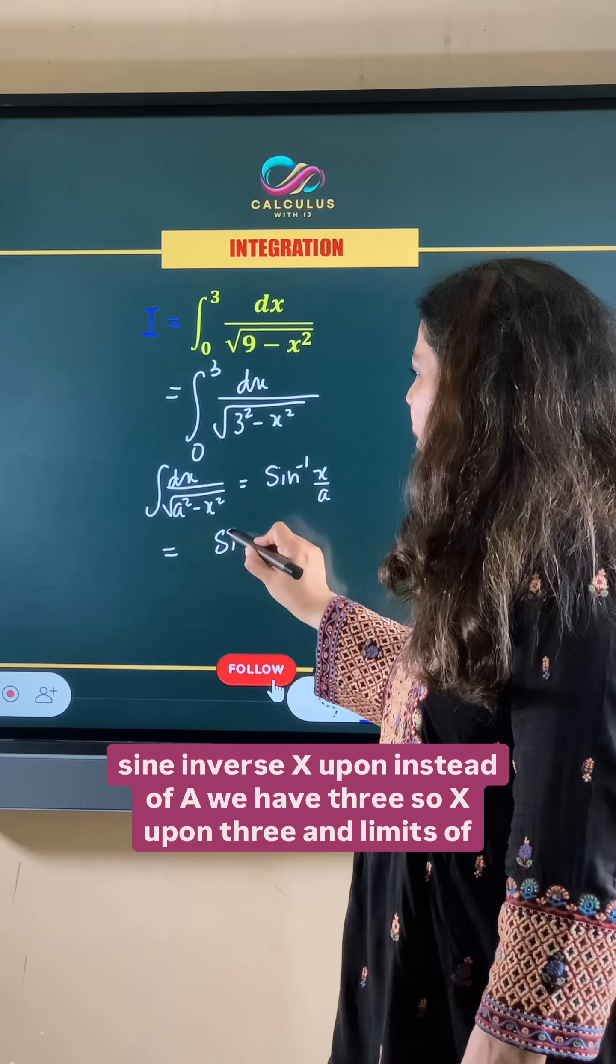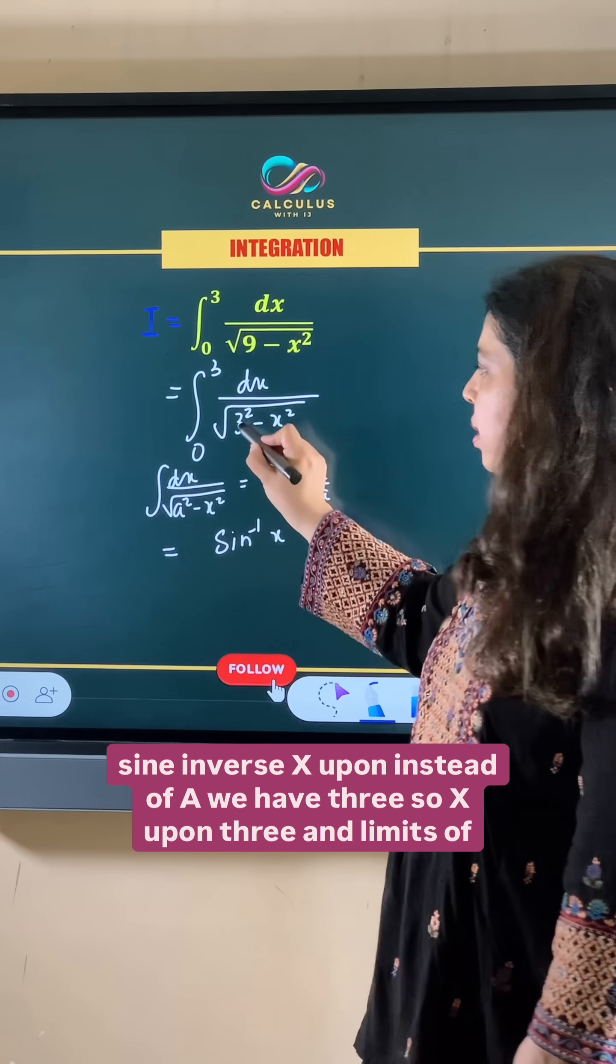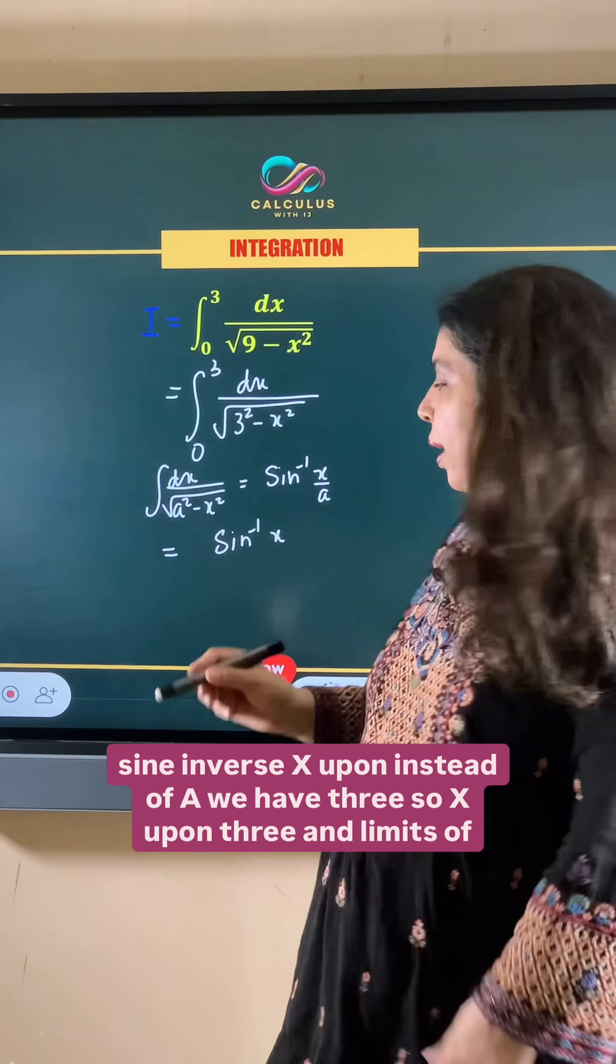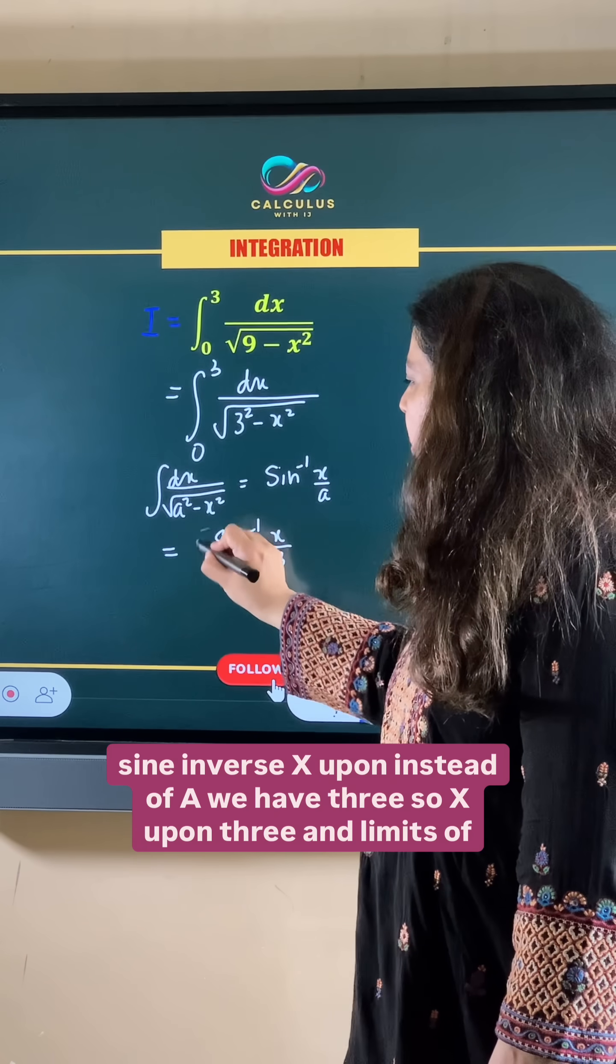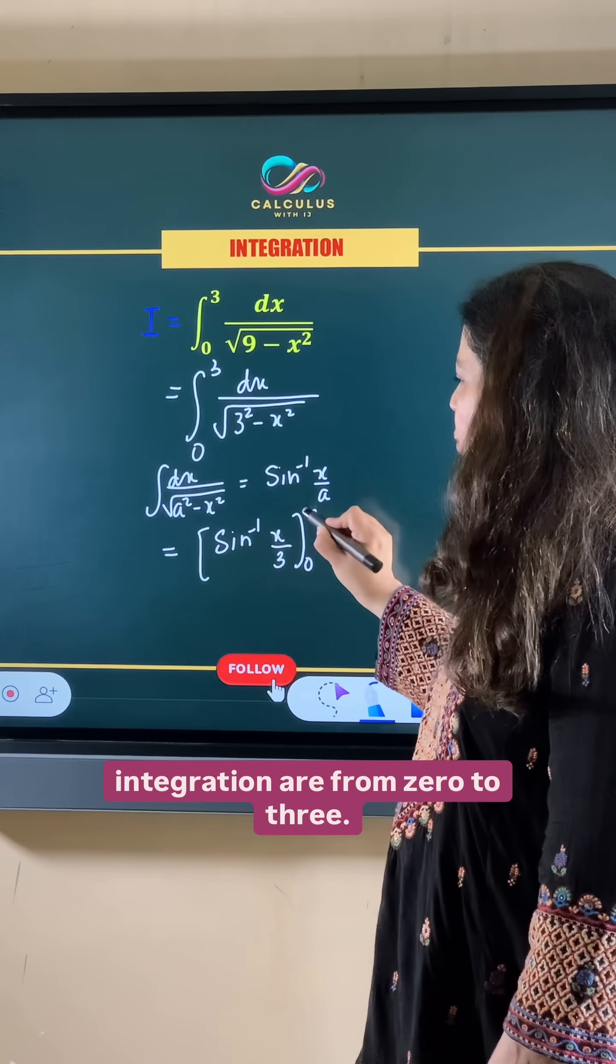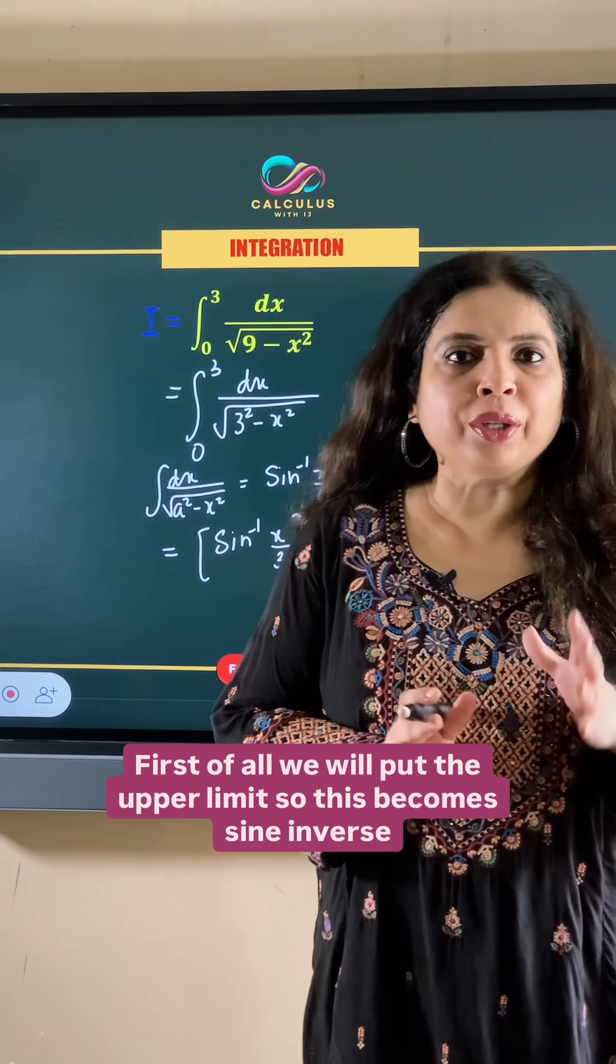So this becomes sine inverse x upon 3 and limits of integration are from 0 to 3. First of all we will put the upper limit.